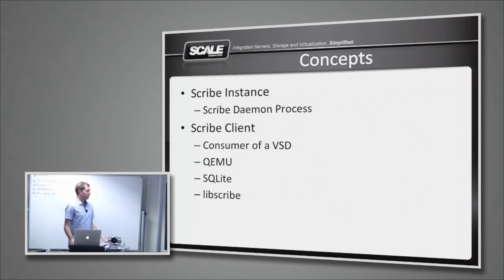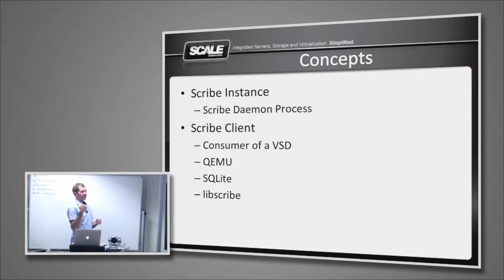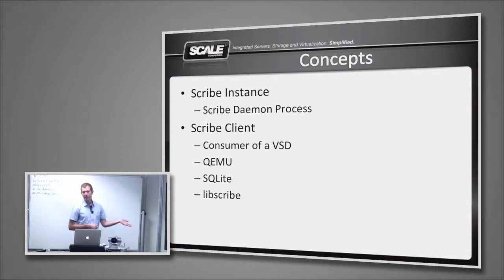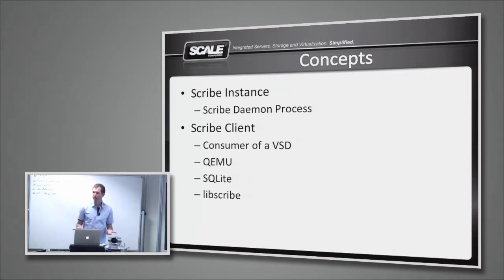The Scribe instance is really just a daemon process — we run one per node. If a node goes down and comes back up, that would be a brand new Scribe instance; the previous instance is now gone, which makes leasing of virtual devices easier. Scribe clients are really just anything connecting to a VSD — in our case mostly QEMU, but you can connect pretty much anything that can use a block device. SQLite has a VFS layer and we've actually built an integration to Scribe, so it's very easy to run a SQLite database on top of a VSD. We do all that via a component called LibScribe — it's just a C API with basic block device semantics.